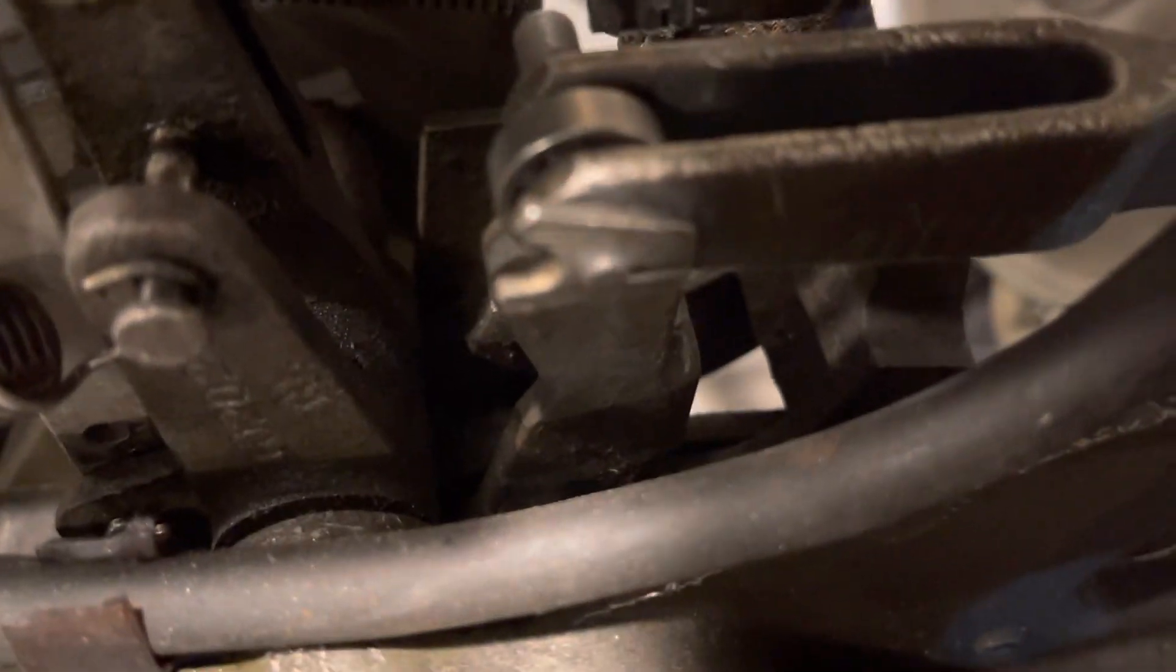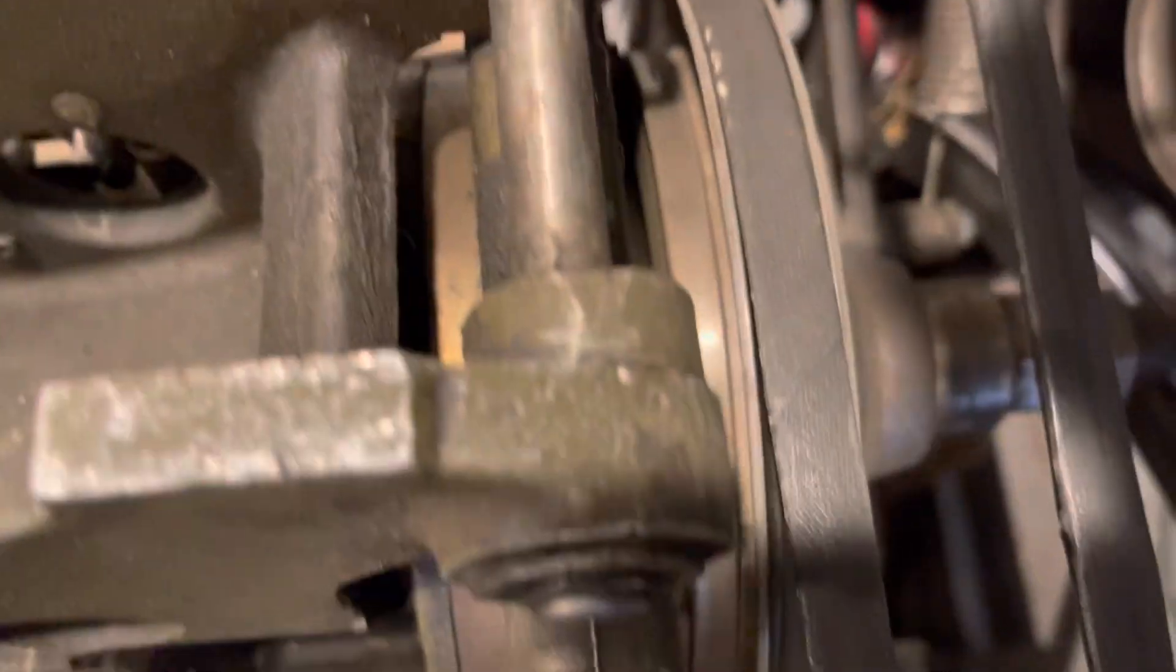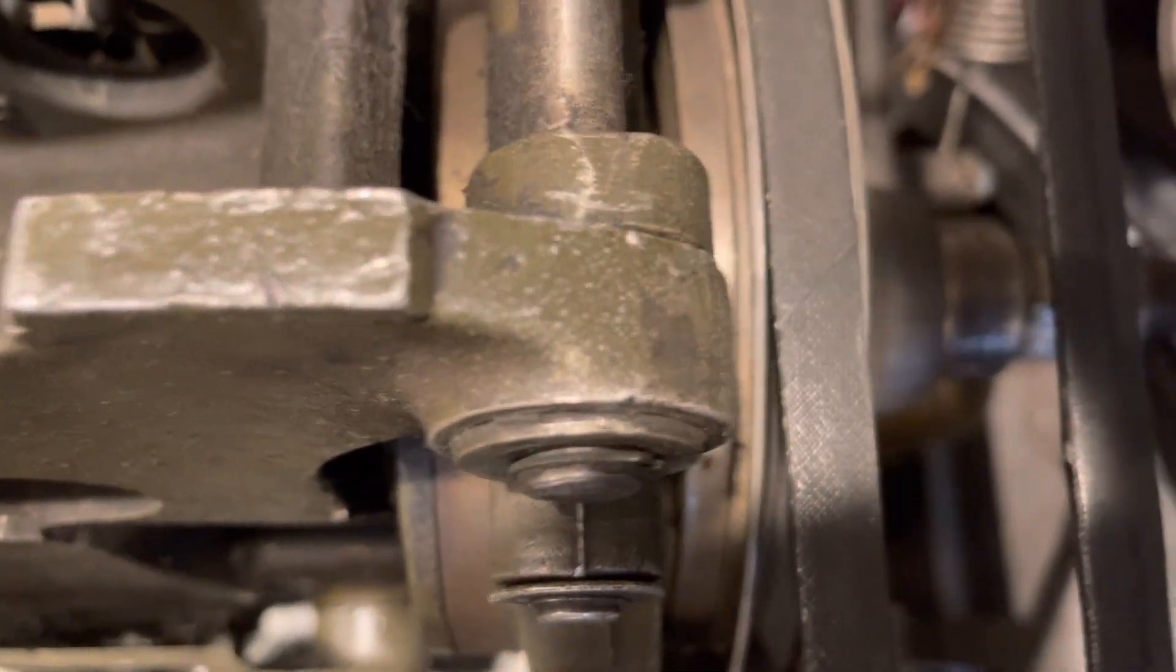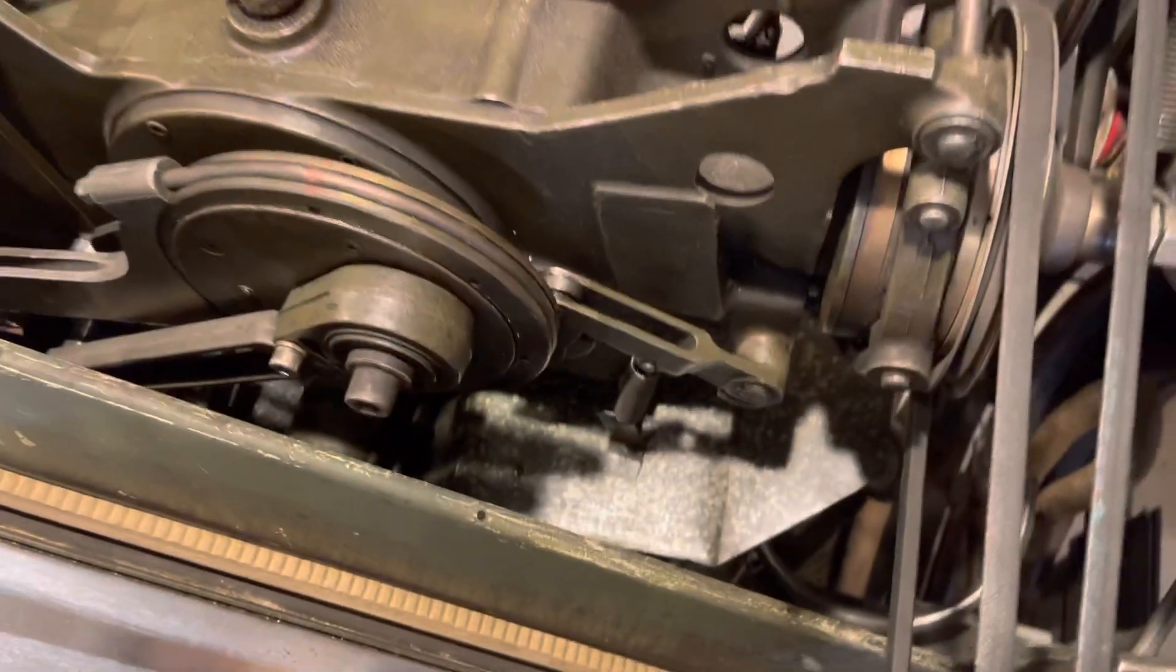And there's the stop arm that the clutch arm is sitting on right now. Anytime that arm wants to go down and that little stop arm is in the way, it lifts up on the clutch assembly and basically disengages the plate, which is right here on the back with the whole clutch assembly.